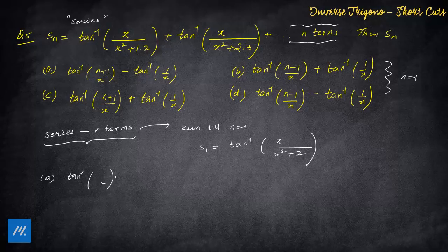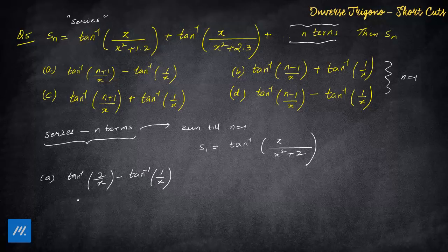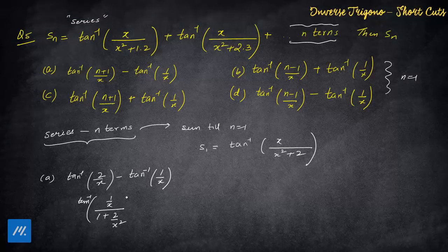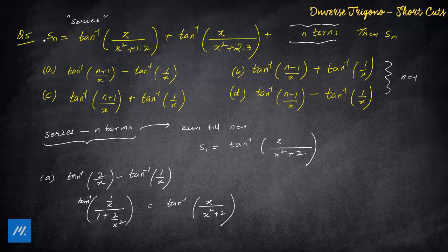Trying option A with n = 1: it becomes tan inverse(2/x) − tan inverse(1/x). Applying the a − b formula gives tan inverse[(2−1)/x ÷ (1 + 2/x²)] = tan inverse[1/x / (1 + 2/x²)] = x/(x² + 2). The answer matches directly. It's a bit lucky that the first option matched straightaway, but that's how it went.